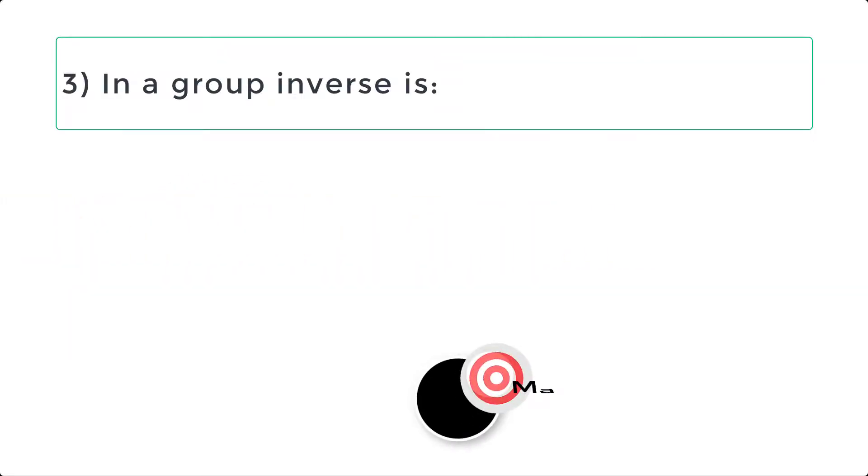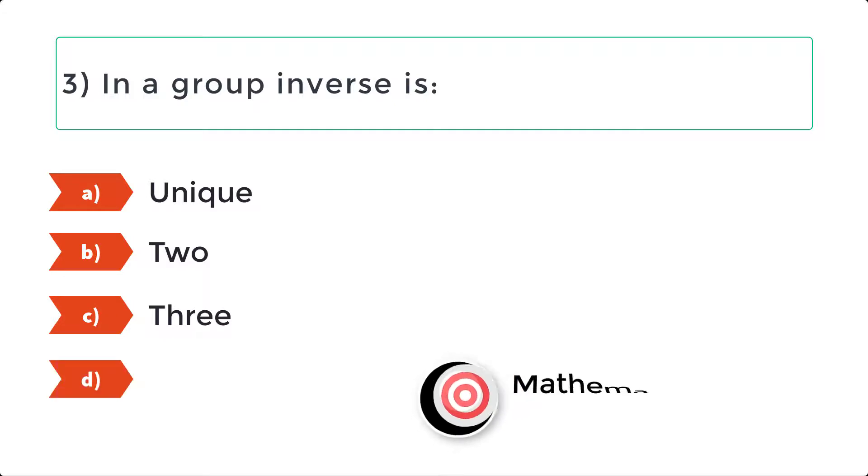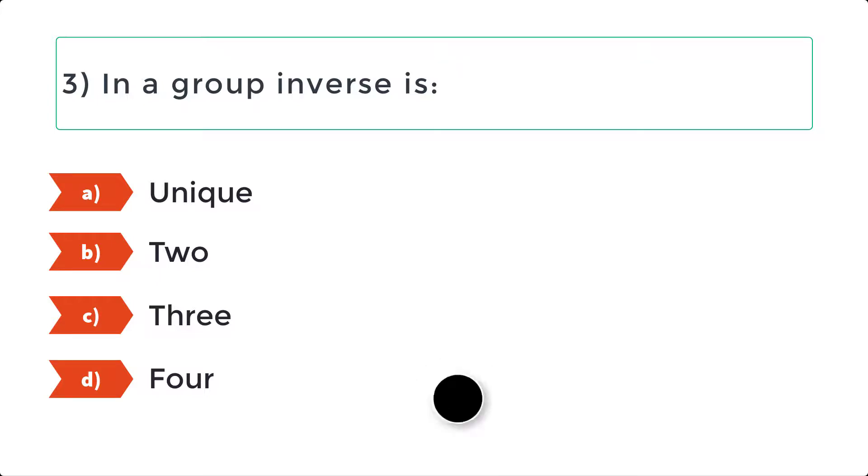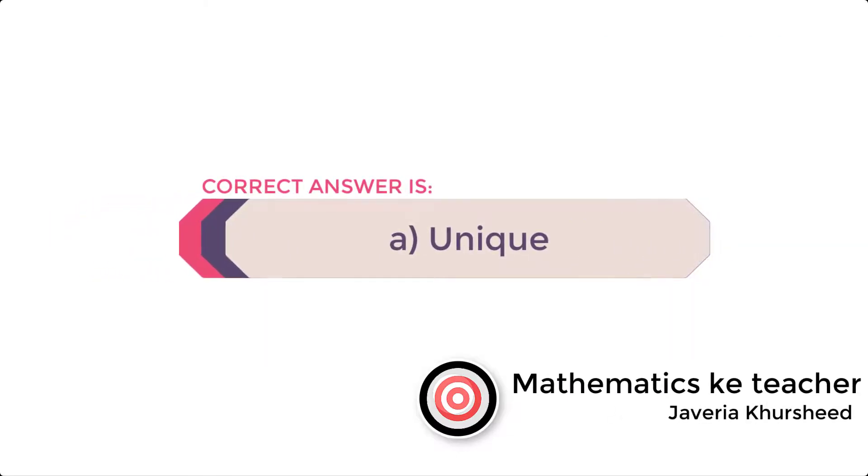Question 3: In a group, inverse is: A. Unique, B. 2, C. 3, D. 4. Correct answer is A. Unique.